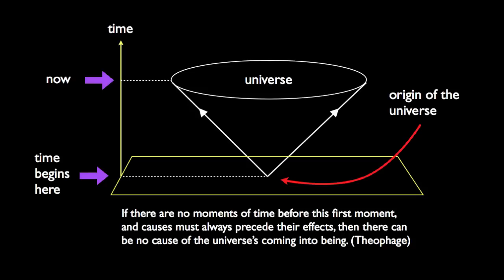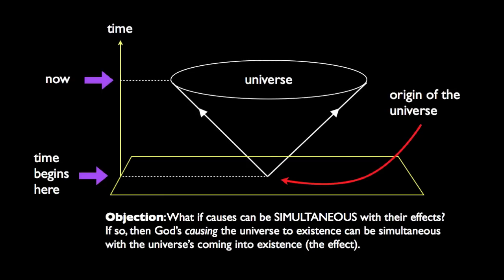So what does this have to do with simultaneous causation? One way a defender of the Kalam argument can respond is to say that causation doesn't necessarily have to be a temporal process with causes always preceding their effects. Maybe causes can sometimes occur simultaneously with their effects. If we grant this, then maybe the cause of the universe's coming into being occurred simultaneously with the universe's coming into being — at that very first moment, some causal power was at work that simultaneously brought the universe into existence. This takes the steam out of Theophage's objection, giving room for God or some other causal agent to function as the causal explanation. So what Theophage wants to do is block this move by arguing against simultaneous causation.